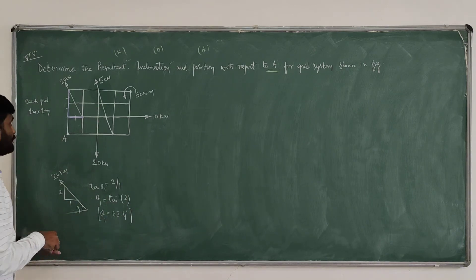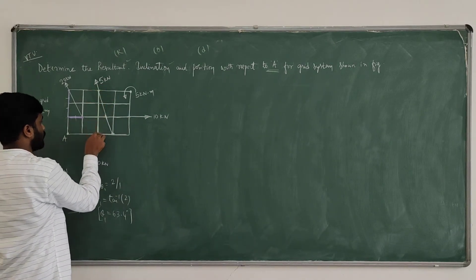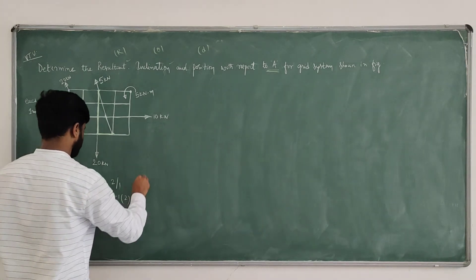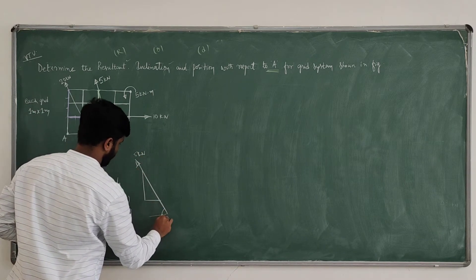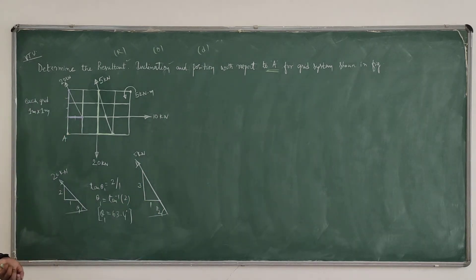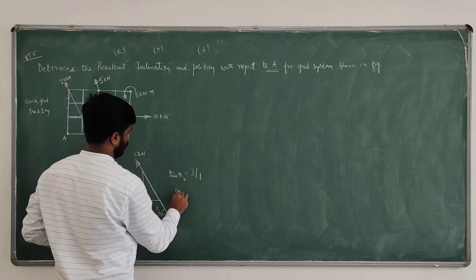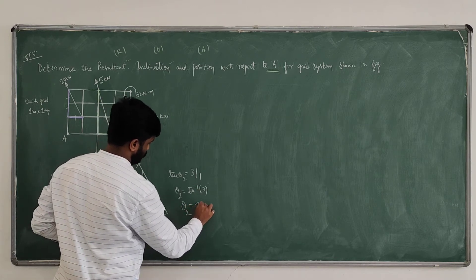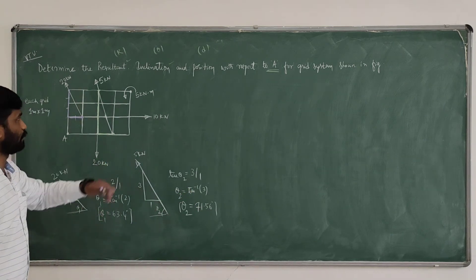Next, come to the second force — 5 kilo Newton. Identify the slope from the starting point to the end point. Vertically there are 3 grids, so 3 meters; horizontally only 1 grid, so 1 meter. Therefore, tan θ2 = 3/1, so θ2 = tan⁻¹(3) = 71.56 degrees. We have now determined the two inclination angles.